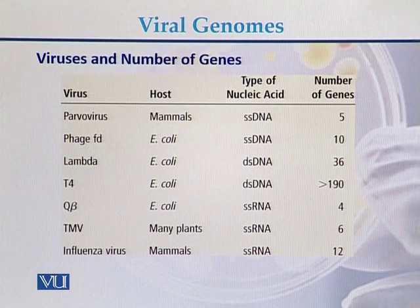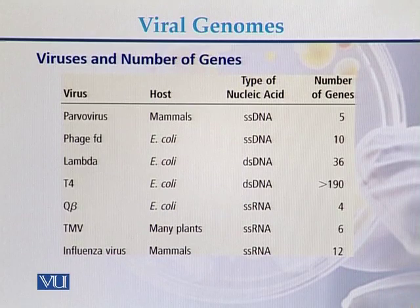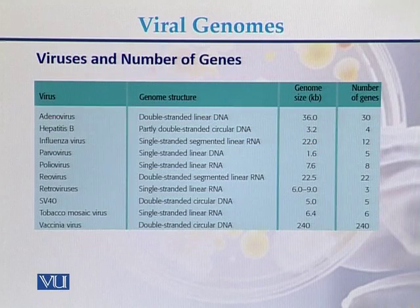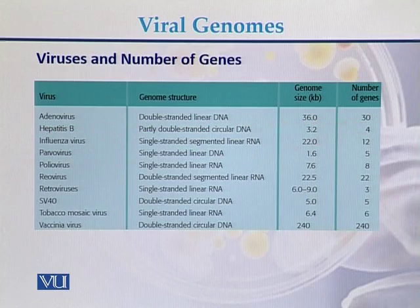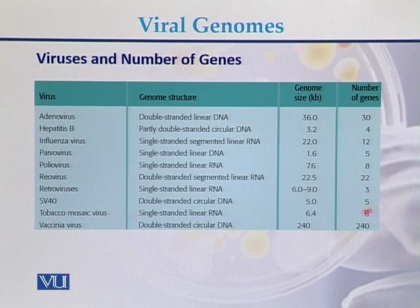Further comparison of viral genomes and gene numbers: adenovirus has 30 genes, hepatitis B virus, influenza virus, parvovirus, and tobacco mosaic virus with an approximate genome size of 6.4 kb are also included in this comparison.